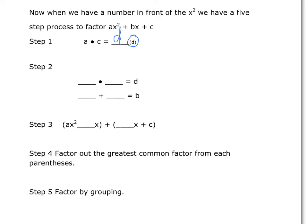We're going to multiply our leading coefficient by our last term to get this new number D. Then, instead of using C, we'll use D. We still find two terms — term 1 and term 2 — that are multiples of D and add up to the middle term B. In step 3, AX squared stays exactly the same, and C stays the same. We plug those two terms in and then factor out the greatest common factor from each set of parentheses — that's factoring by grouping. It's kind of hard to see algebraically, so let's move into an actual practice problem with numbers.